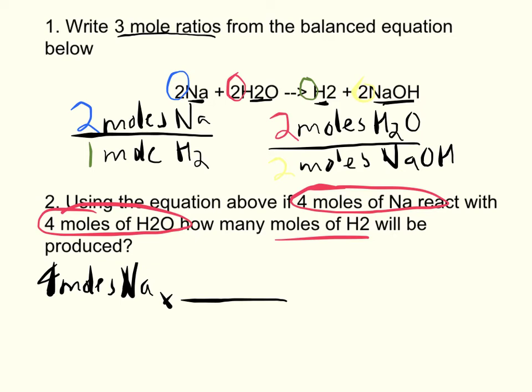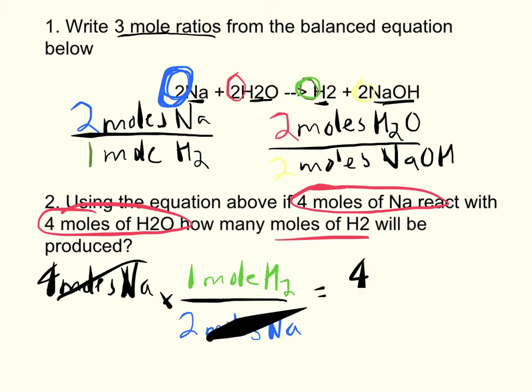Na has a coefficient of two, as we saw up here, so we would write two moles of Na on the bottom so that the moles of Na cancel. On the top, we would write the moles of H2, which in this case from the equation is one, one mole of H2. If we do our unit cancellation, we're left with four times one over two, which equals two moles produced.